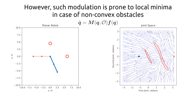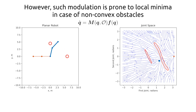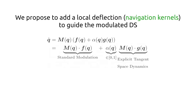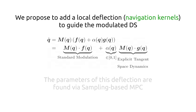One limitation of dynamical system modulation is that it can lead to spontaneous attractors or local minima induced by concave obstacles. In our method we introduce a local deflection to assist the modulated dynamical system to overcome these limitations.